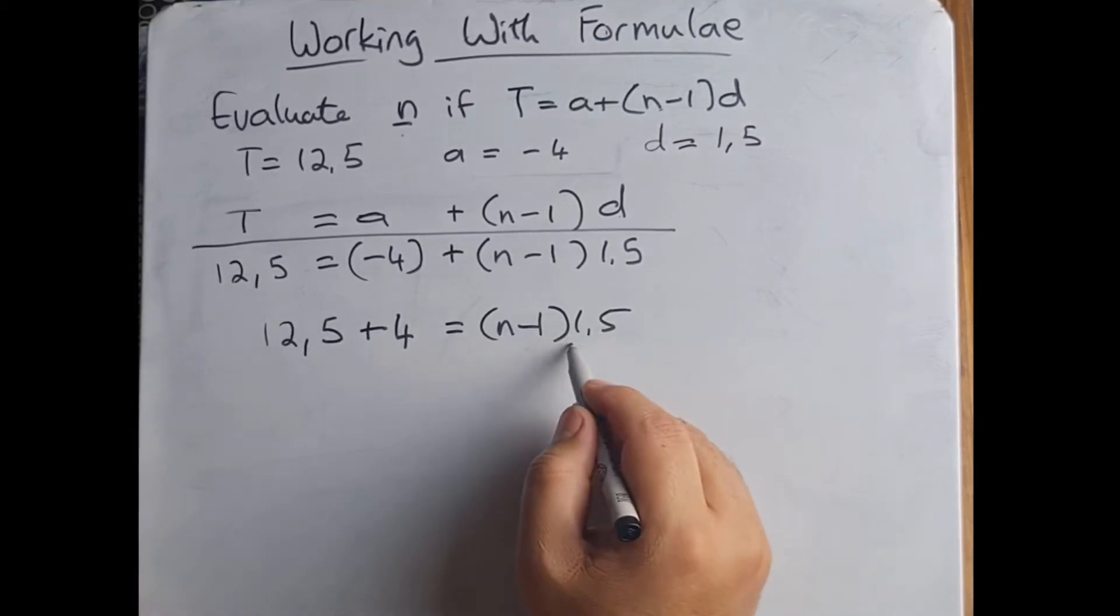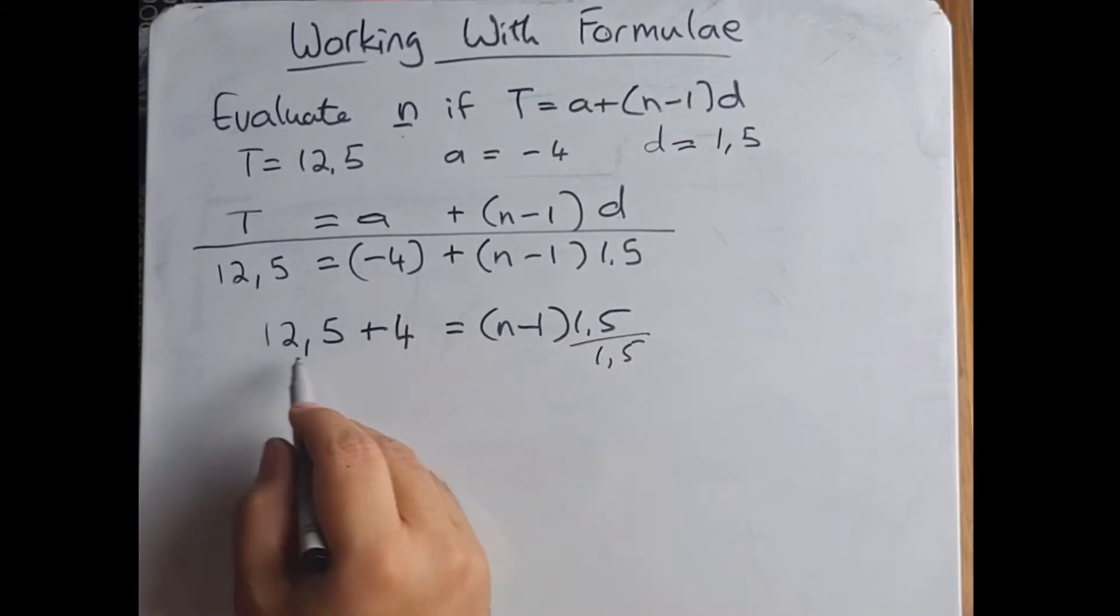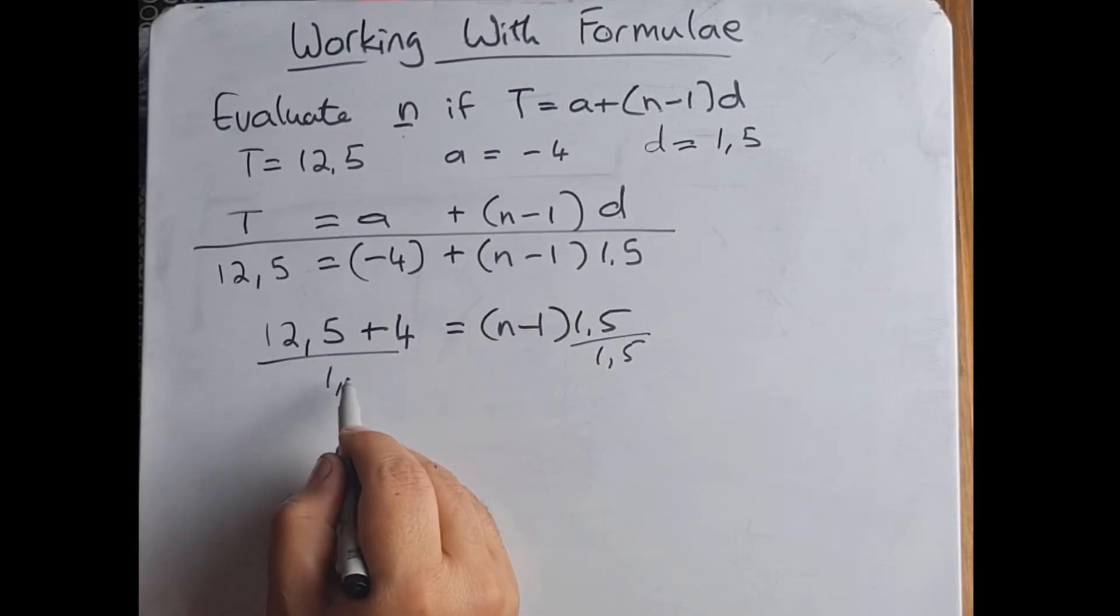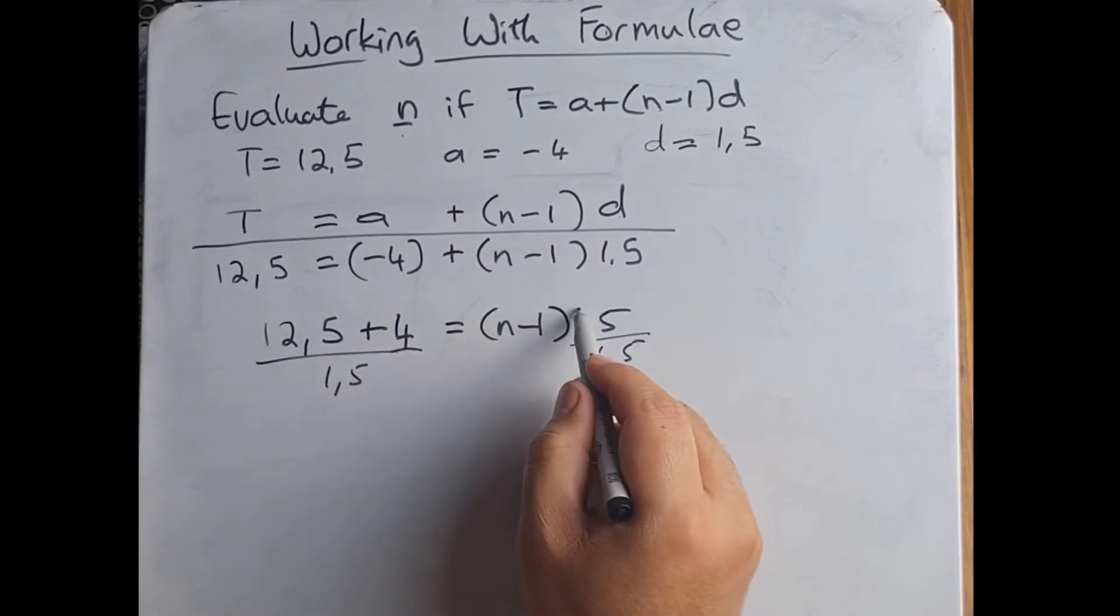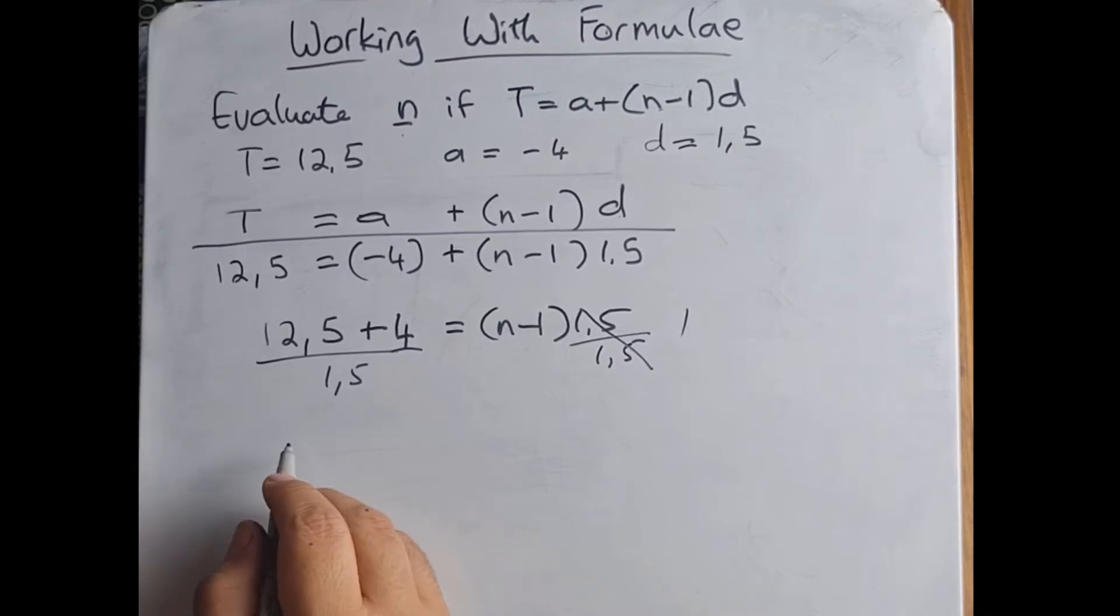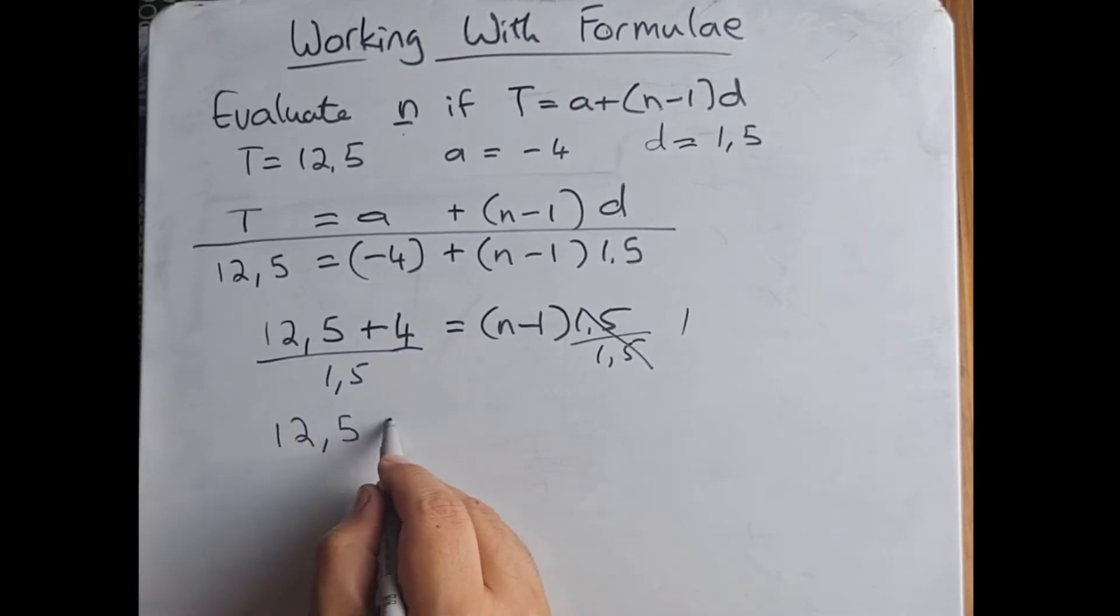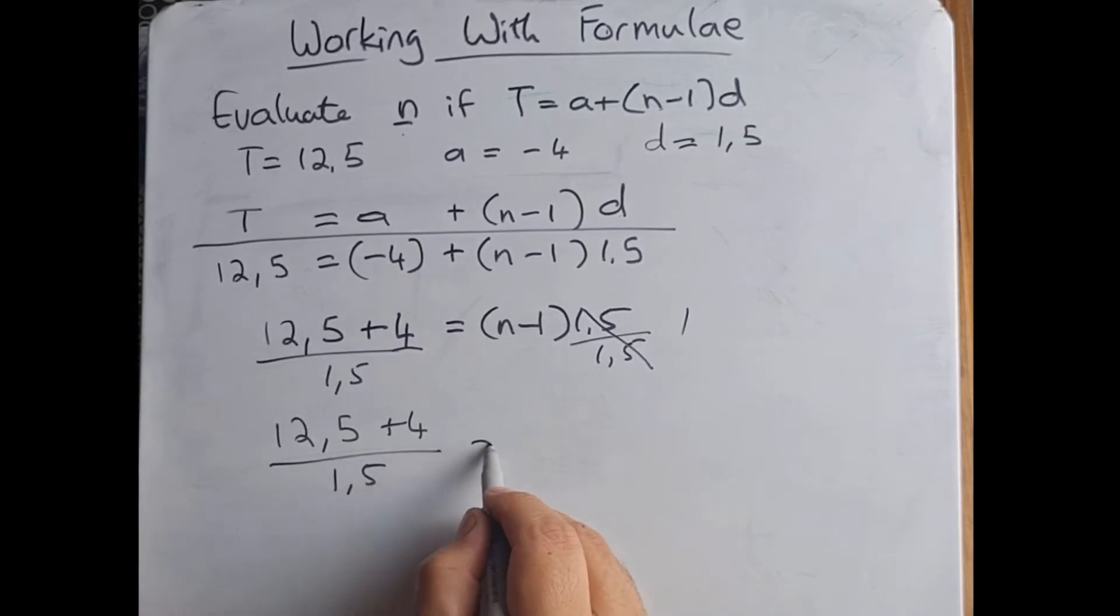Now I can divide this 1.5 by 1.5 to eliminate this, but then I've got to do it to the other side as well. That gets eliminated to 1 and now I've got a formula that reads (12.5 + 4) / 1.5 = n - 1.